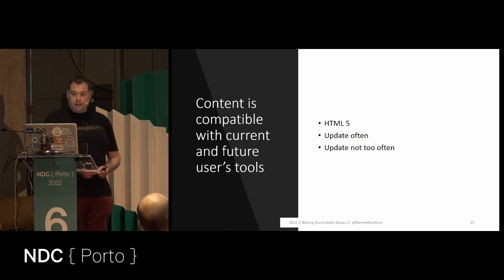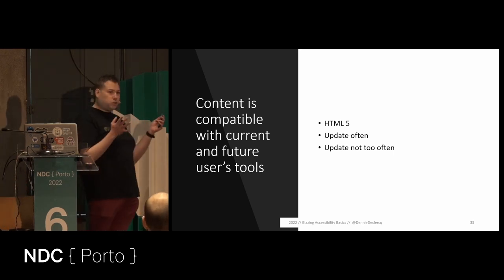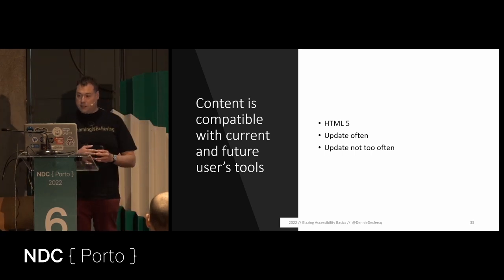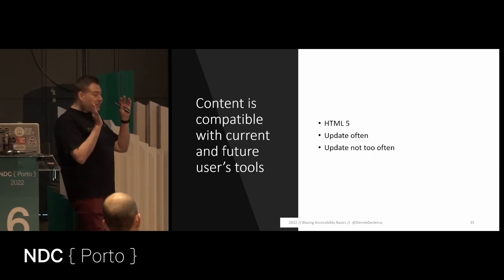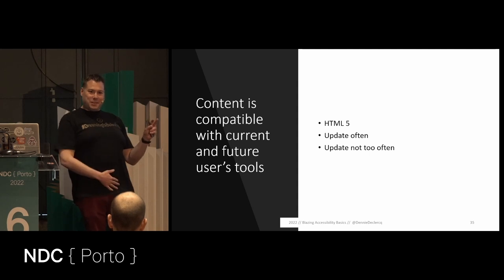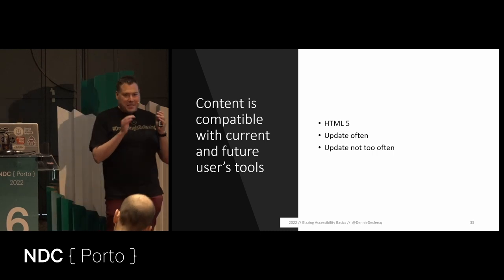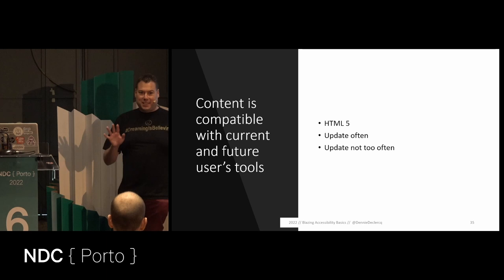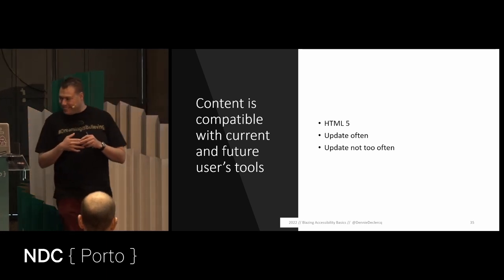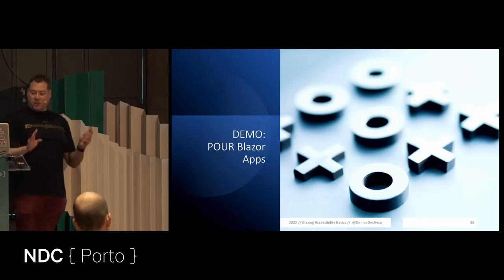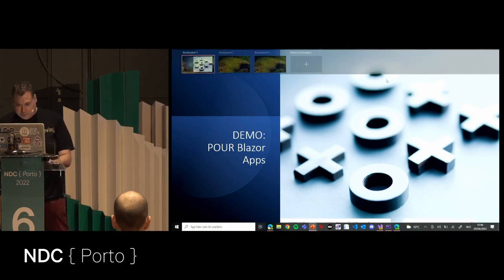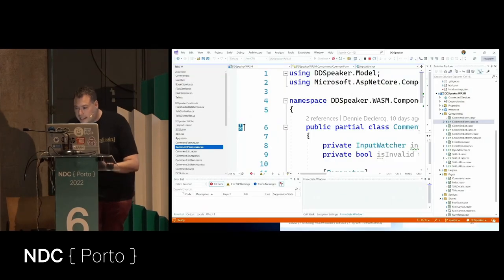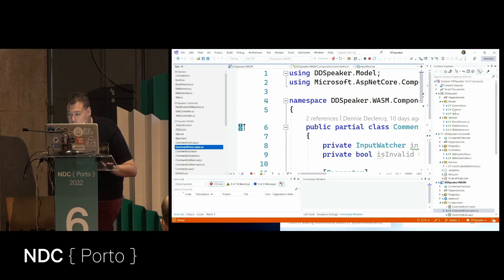For robust Blazor apps, content must be compatible with current and future user agents. Use HTML5 and a solid UI framework on top. There is a paradox: you need to update often, but you shouldn't update too often. And if you do update frequently, avoid breaking UI changes.